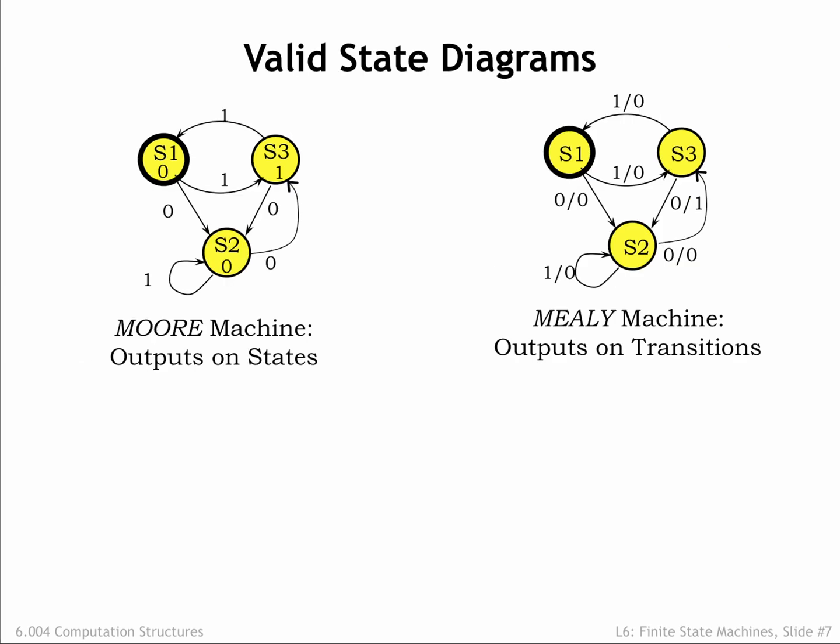We've been working with an FSM where the outputs are a function of the current state, called a Moore machine. Here the outputs are written inside the state circle. If the outputs are a function of both the current state and the current inputs, it's called a Mealy machine. Since the transitions are also a function of the current state and current inputs, we'll label each transition with the appropriate output values using a slash to separate input values from output values.